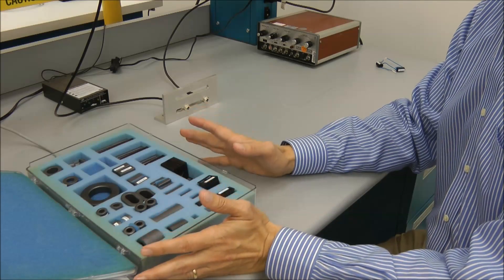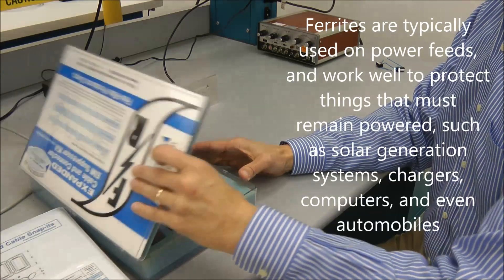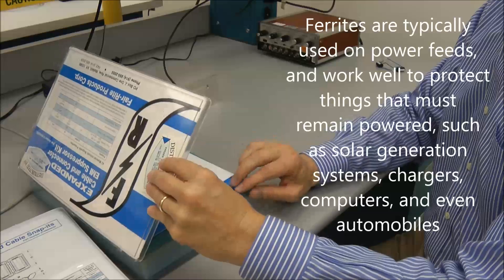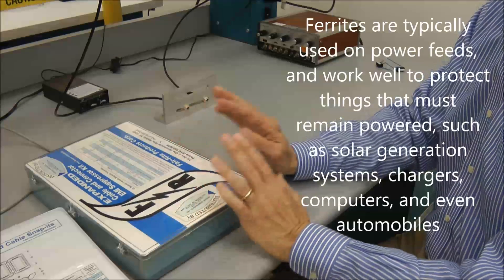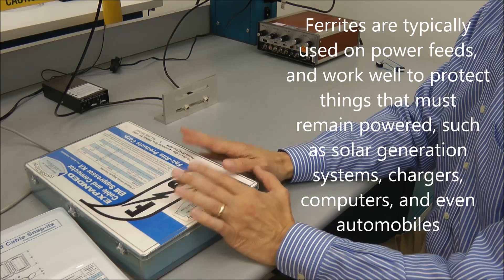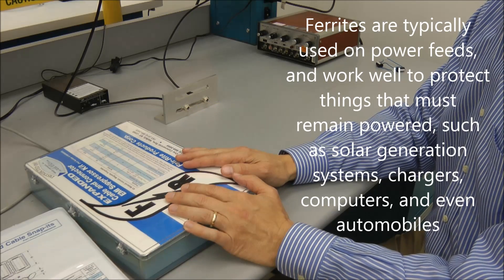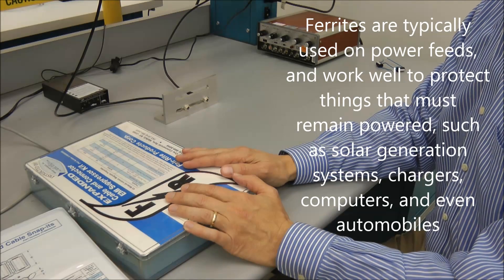So there's lots to know about ferrites, when they will work, when they won't work. They are actually quite effective at reducing conducted transients or transients that get onto a line and are passed along as conducted. And I'll show you a little demonstration of how they might be used to suppress some high-frequency transient.